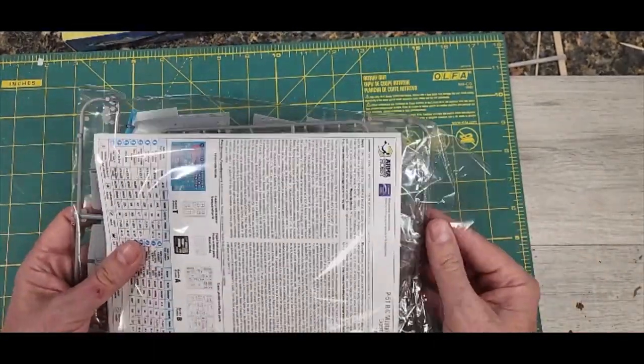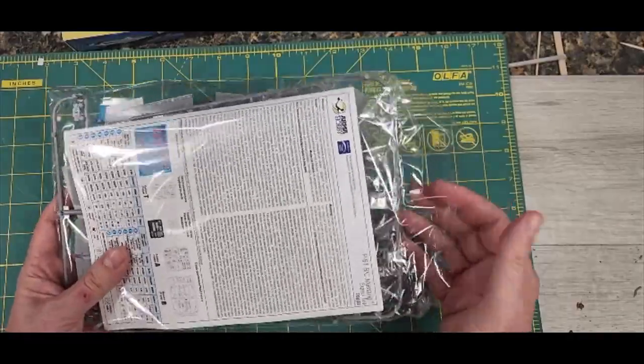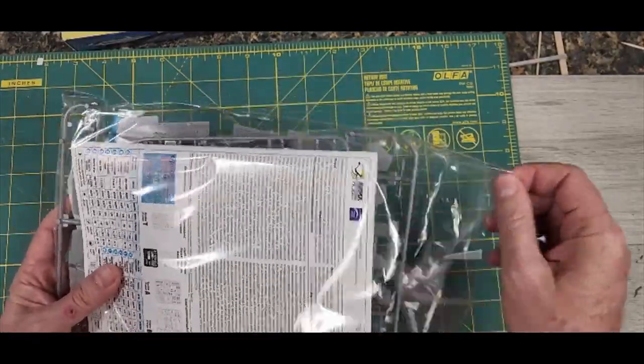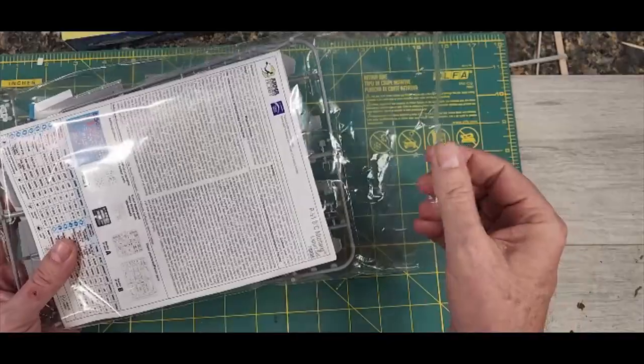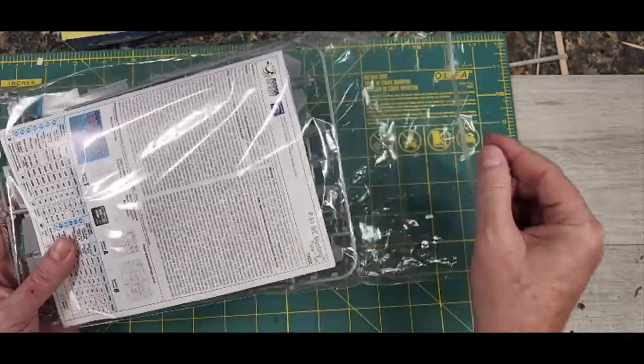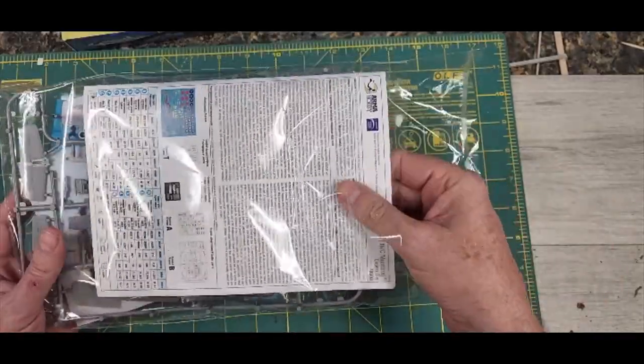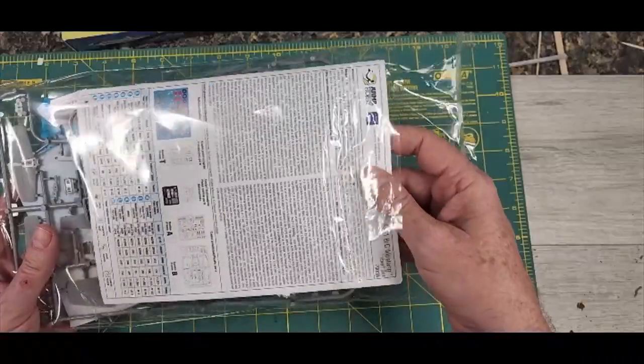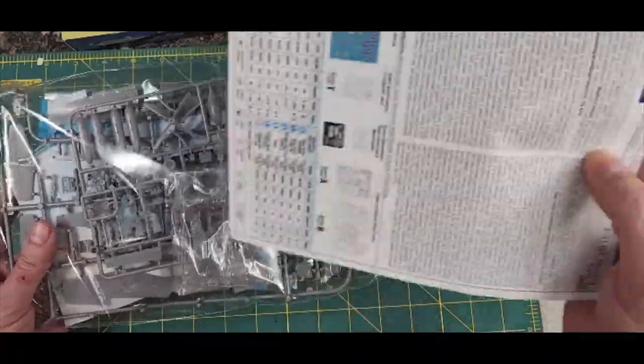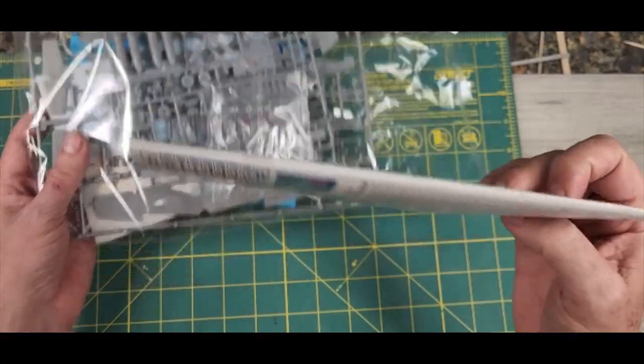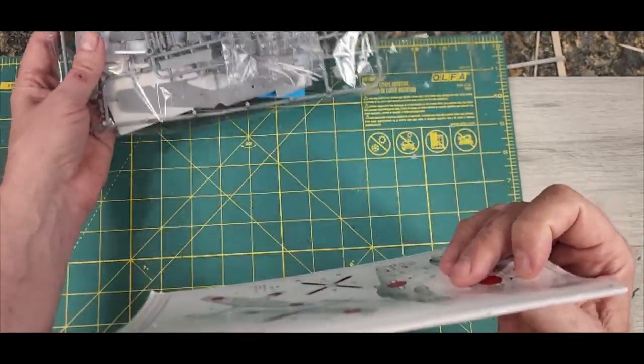It comes in these typical Eastern European packaging, which has these sealable ends with a stick on them that fold over and stick. Eduard does that as well. And that's really nice because you can pull the parts out, look at them and put them back in without having to tear the plastic off and throw that stuff away. That's pretty cool.